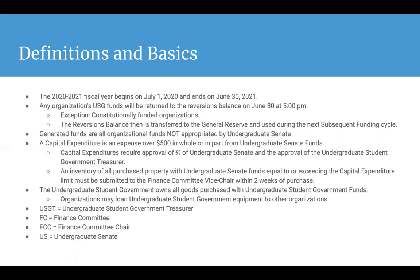The Undergraduate Student Government owns all goods purchased with Undergraduate Student Government funds. However, organizations may loan Undergraduate Student Government equipment to other organizations. It is that organization's responsibility to keep track of this equipment and to let Undergraduate Student Government know. At the bottom, I just have a couple of short terms that I use throughout this PowerPoint to represent the Undergraduate Student Government Treasurer, the Finance Committee, the Finance Committee Chair, and the Undergraduate Senate.